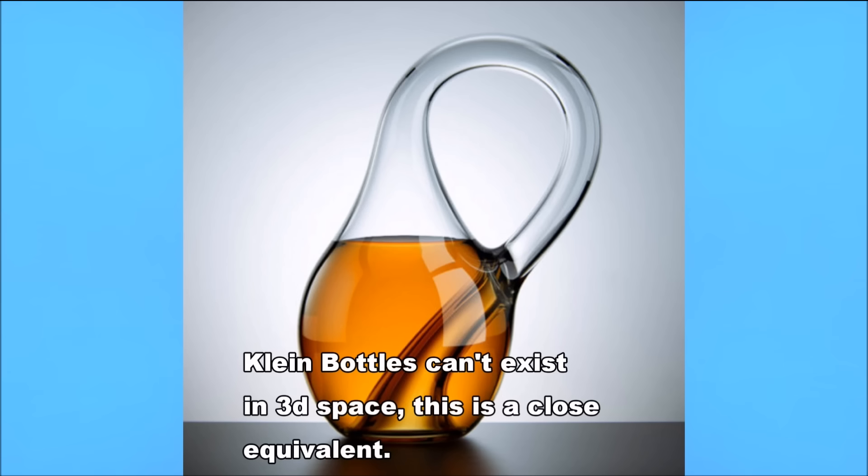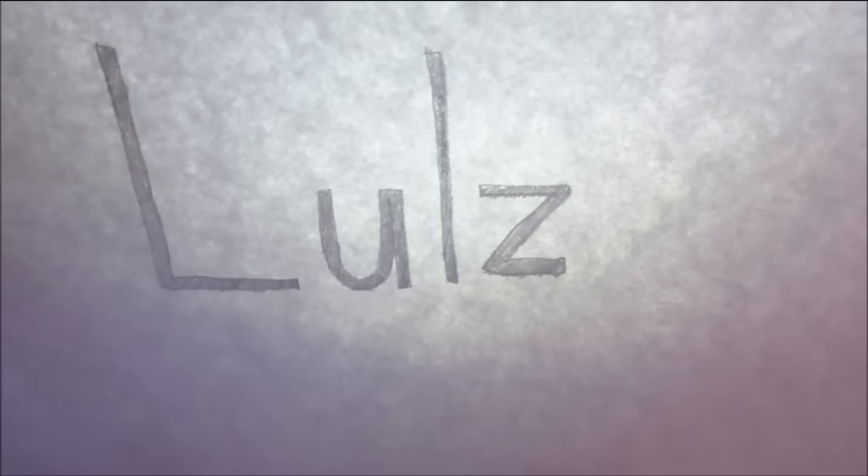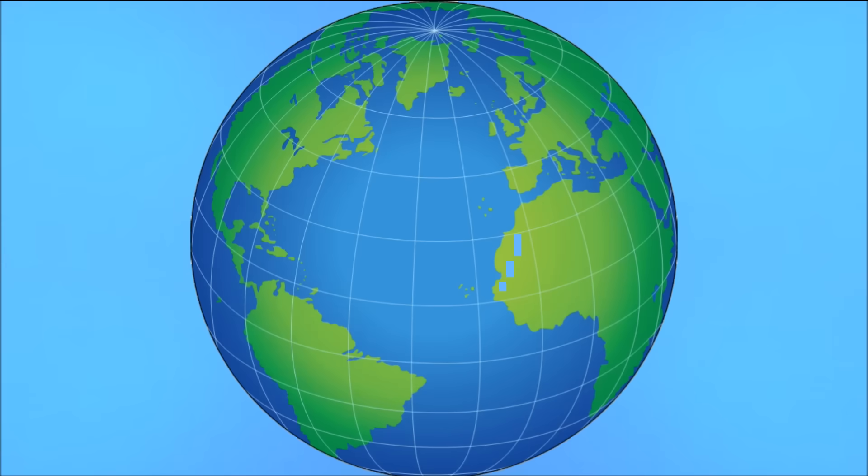Thanks to a little 4D trickery, a figure called a Klein bottle can exist, where the inside and outside are the same. Ever notice how you can mirror writing on a page by flipping it over? In 4D space, you can mirror a whole 3D object just by flipping it over four-dimensionally.